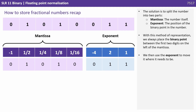The solution is to split the number into two parts: the mantissa, which is the number itself, and the exponent, which is the position of the binary point in the number. With this method of representation we always place the binary point between the first two digits on the left of the mantissa, and then use the exponent to move it where it needs to be.